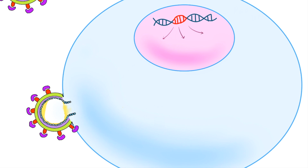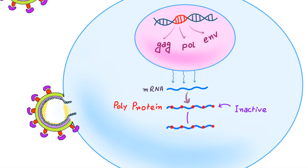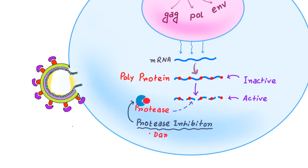In the proviral DNA, three important genes are present: GAG, POL, and ENV. These help in forming messenger RNA, from which important polyproteins are made. These polyproteins are functionally inactive and need to be cut into pieces to become active. The enzyme that does this cutting is called protease. Drugs that inhibit the protease enzyme are called protease inhibitors. Examples include darunavir, lopinavir, indinavir, and ritonavir.